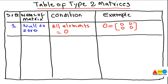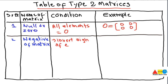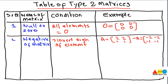The next Type 2 matrix is the negative of a matrix. As its name indicates, we invert the sign of all elements of the matrix — positive elements become negative and negative elements become positive. For example, if A = [2, 1; 2, 1], then the negative of A, written as -A, is [-2, -1; -2, -1]. We have inverted the sign of all elements.